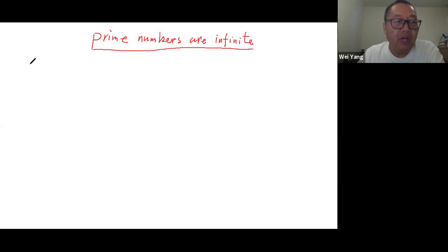We still use contradiction to prove this. So first, let's suppose prime numbers are finite.